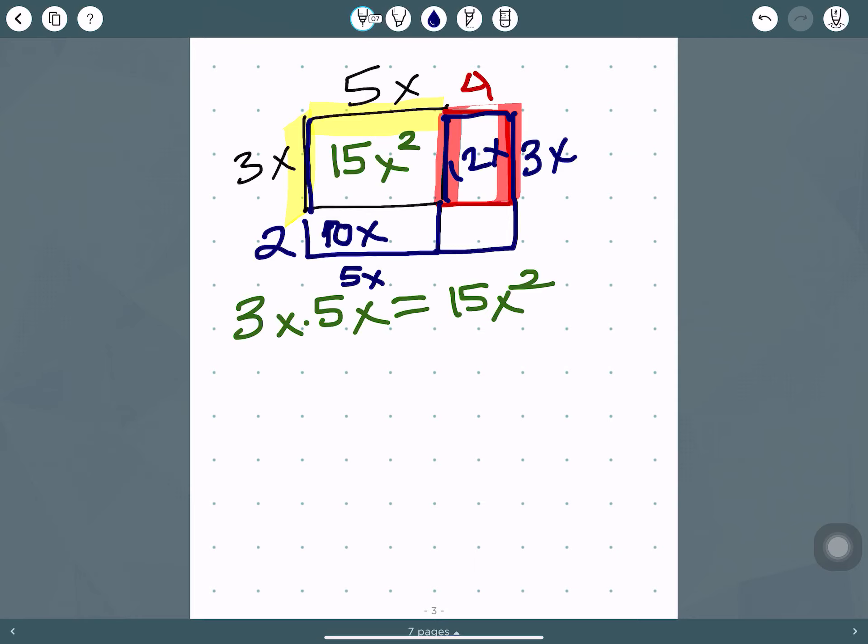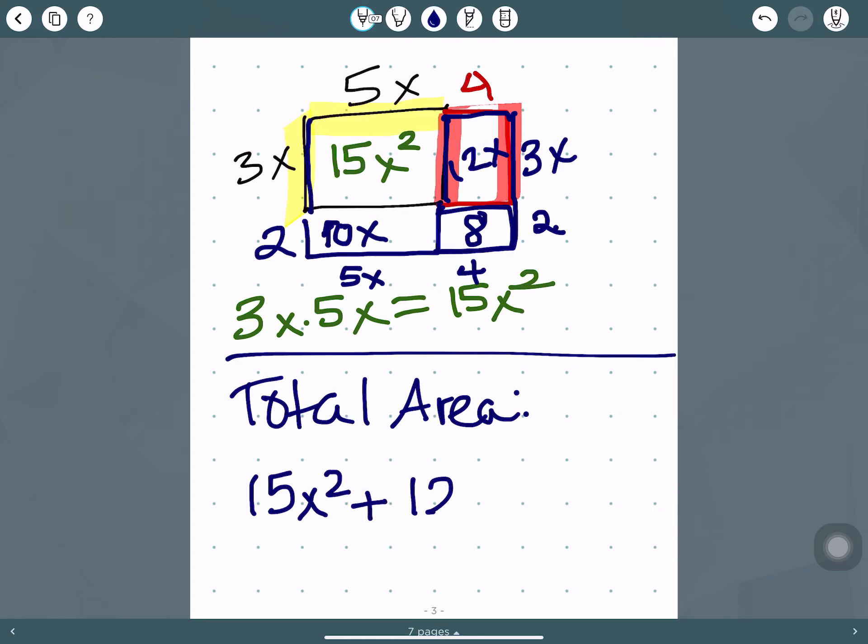So then we have this last piece, and the length is 4, and the width is 2, so the area of that is 8. So for the total area, we have 15x squared plus 12x plus 10x plus 8.